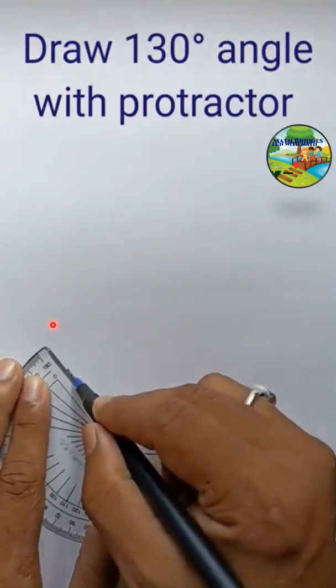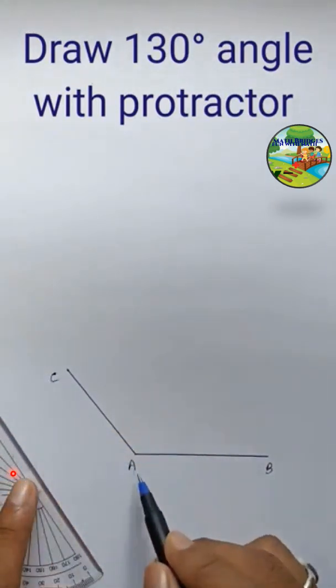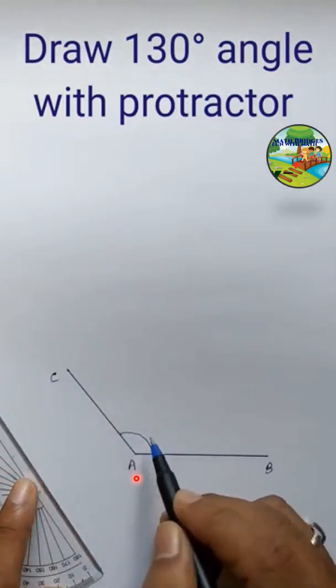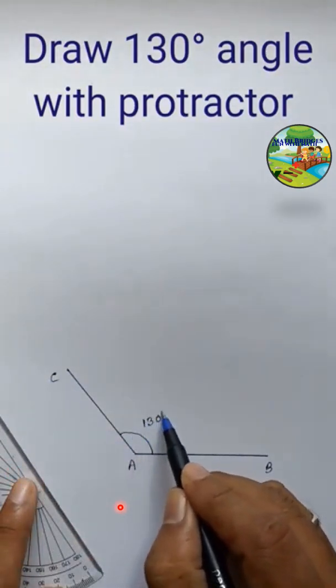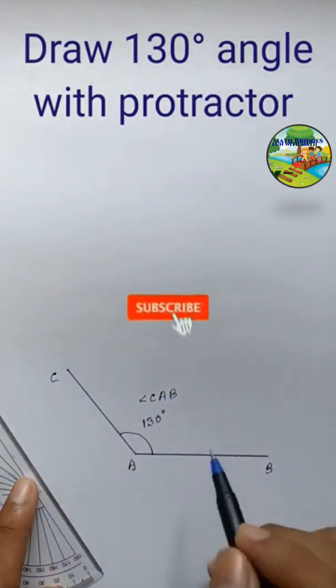After extending, you can label that one as C. Now angle CAB this is. It is 130 degrees. Angle CAB is 130 degrees.